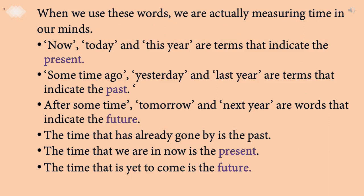When we use these words, we are actually measuring time in our minds. Now, today, and this year are terms that indicate the present. Sometime ago, yesterday, and last year are terms that indicate the past. After some time, tomorrow, and next year are words that indicate the future.